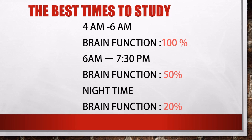What are the best times to study? From 4 a.m. to 6 a.m., your brain function is at 100% — it's fresh in the morning and retains all details. From 6 a.m. to 7:30 p.m., brain function drops to 50%. At nighttime, brain function is only 20%, because your brain cells are tired and can absorb less.